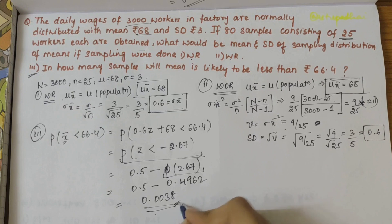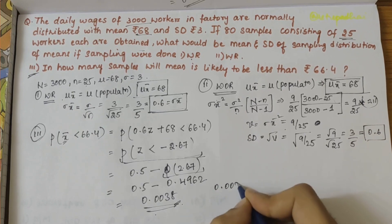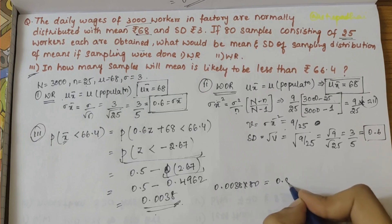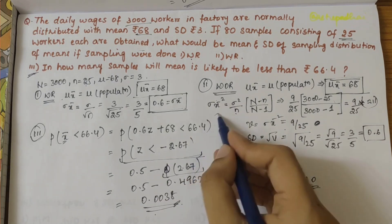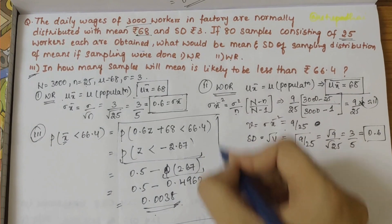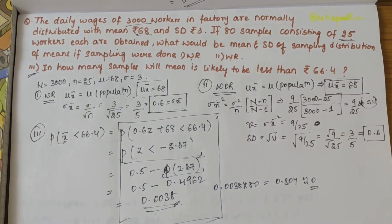So the expected number of samples of 80 having mean less than 66.4 is 0.0038 × 80. So the answer is 0.304 approximately. Write it as 0. So there are 0 samples.